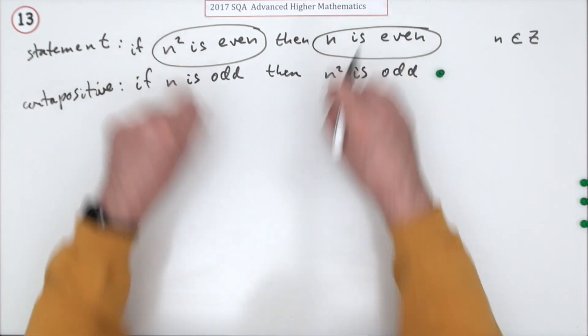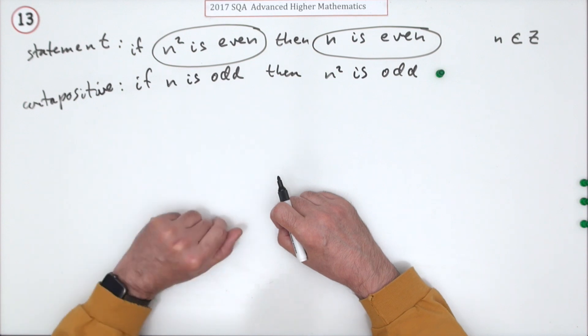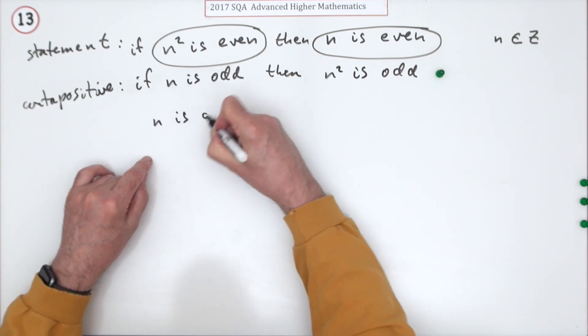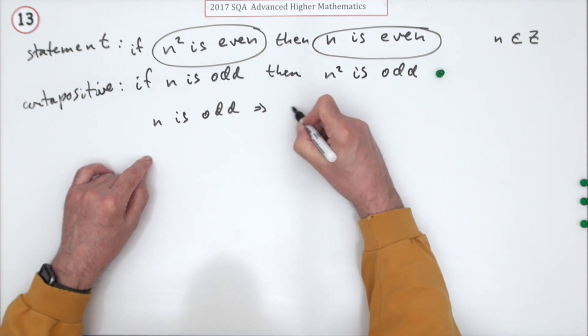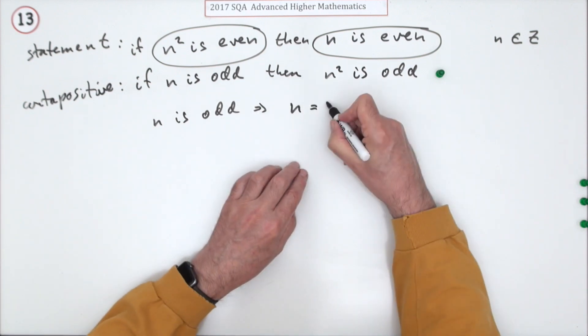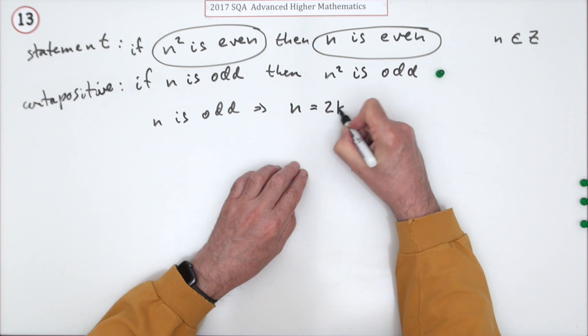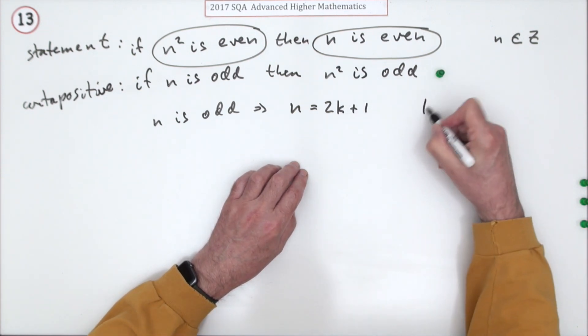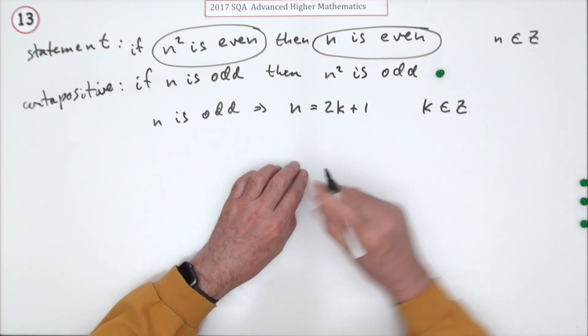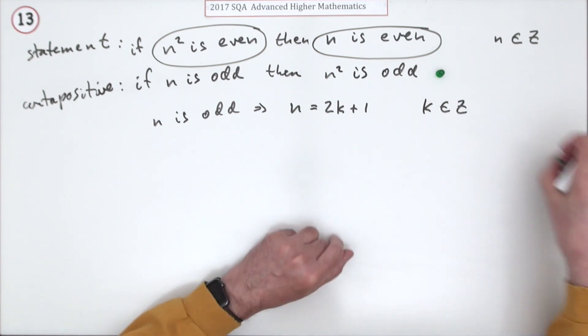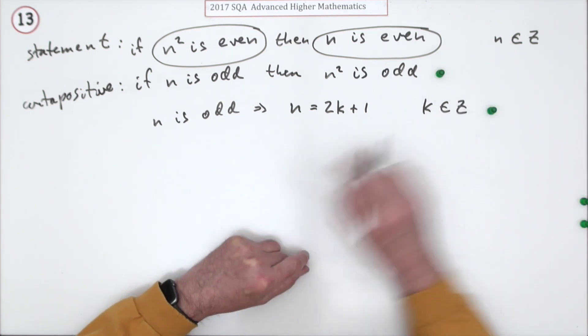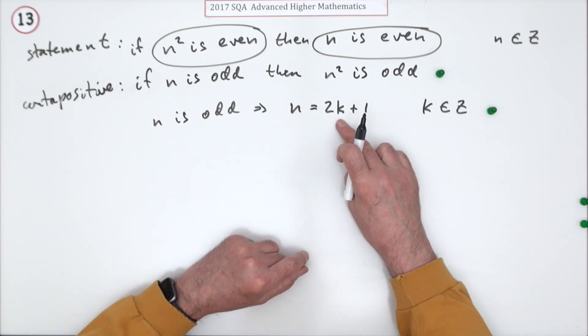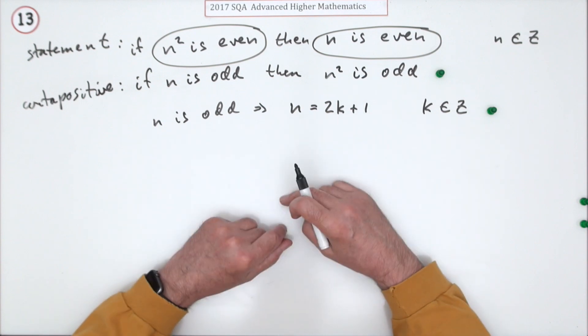Now you've just got to prove this instead of that, so you're starting with this, n is odd. Well, if n is odd, that means n can be written as two times some number plus one, where that k is itself an integer. Just doing that gets the second mark. You have to add this bit on of course, you couldn't have k been any number, like a half for instance, because then it wouldn't be odd.